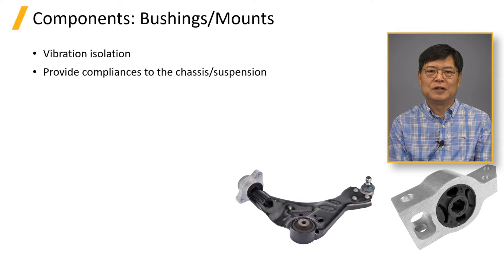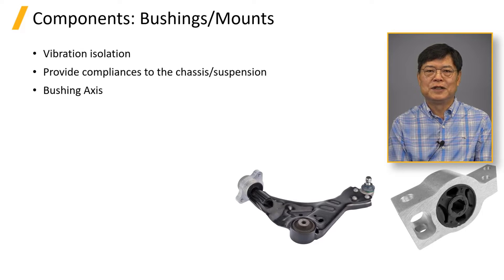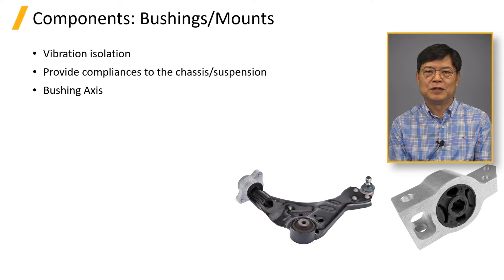Bushings have a cylindrical shape. Radial stiffness rates are generally higher than the axial rate. Conical rates are also higher than the torsional rate. Some bushings have asymmetric rates for compression and tension, so the bushing direction should be carefully represented.